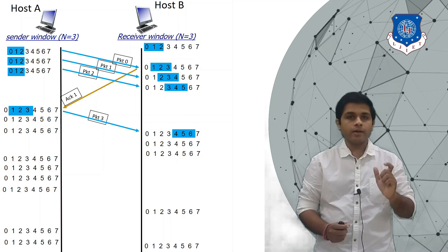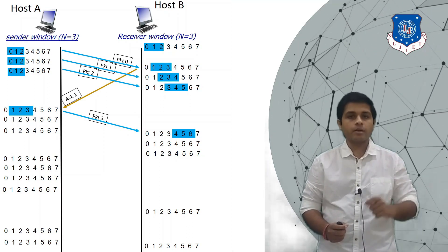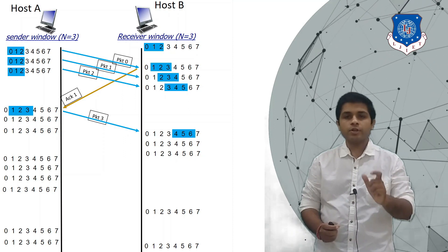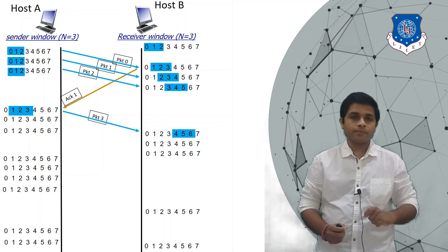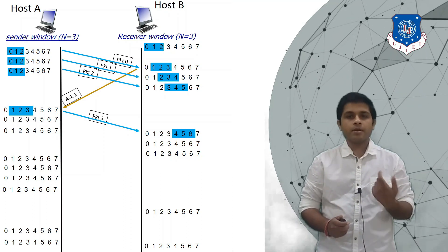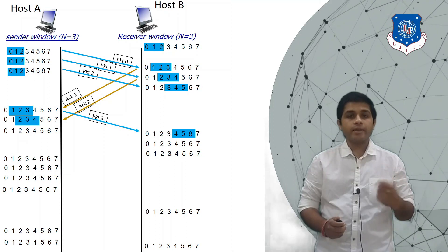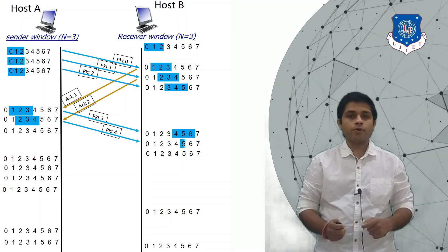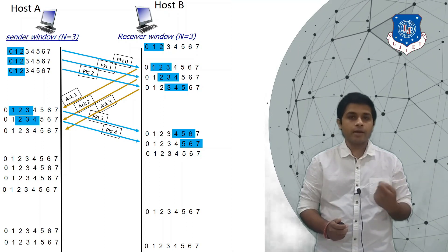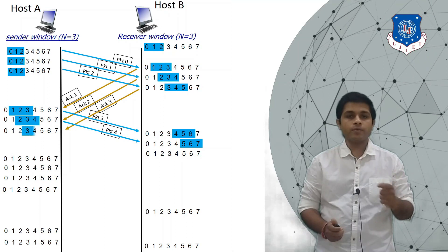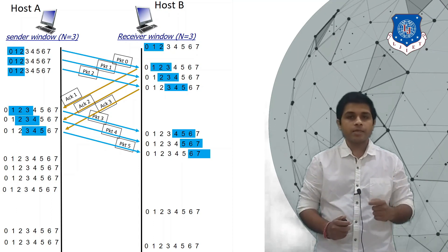The current position of A's window shows that packets 1, 2, and 3 are in transmission and not yet acknowledged. The receiver's window tells us it is expecting packets 4, 5, and 6 next. After some time A receives ACK 2 for packet 1 and sends packet 4. B receives packet 4. Then A receives ACK 3 and sends packet 5. B receives packet 5 and the window slides.